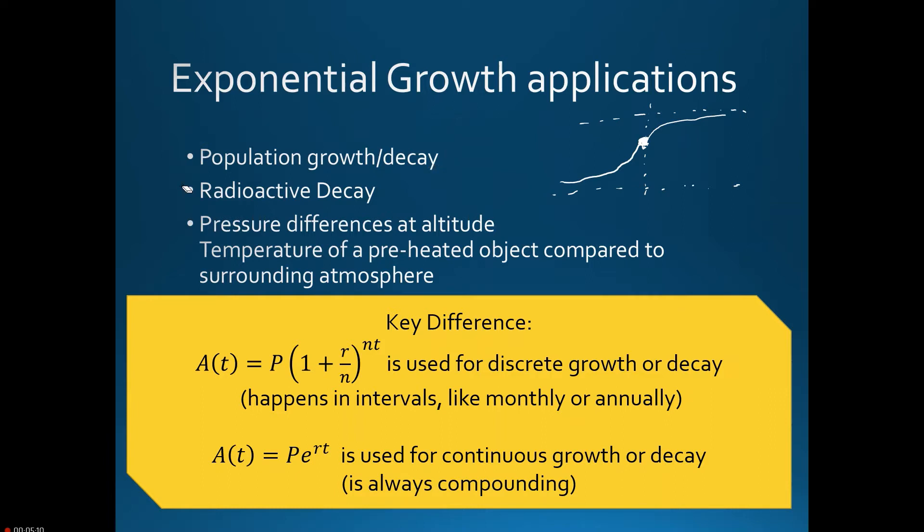And so we'll be looking at a lot of population growths, whether that's bacteria in a petri dish, which would increase exponentially up until it hits half of your carrying capacity. What I mean by that is there's only so much space in a petri dish. So it does increase exponentially, but there is a point where you'll run out of resources, in this case space. We could also do pressure differences at altitude, which we'll take a look at in a minute. Or temperature of a preheated object compared to surrounding temperature, which we'll take another look at in another slide after this.